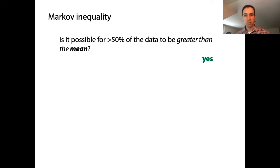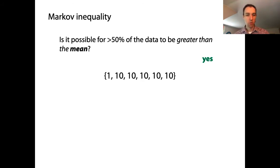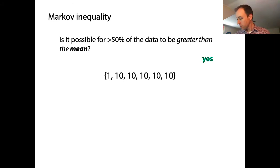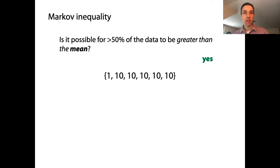Let's take a really simple data set where we have six teachers and their teaching evaluation ratings are one and then five tens. What's the arithmetic mean? It's just somewhat less than ten, but five out of the six data points are ten, so five out of six data points are greater than the mean. Absolutely, we can have more than half of the data points be greater than the mean.